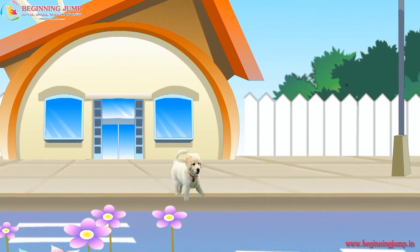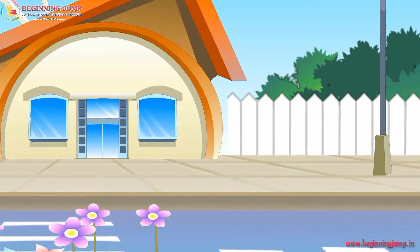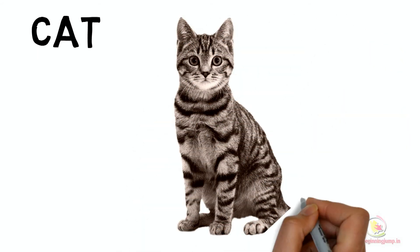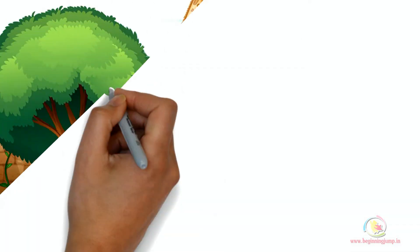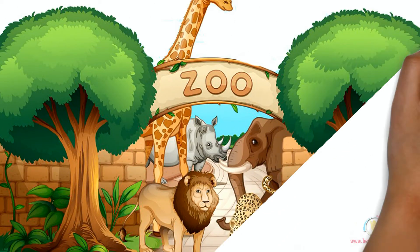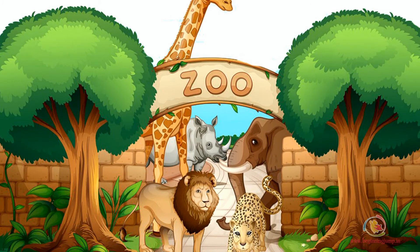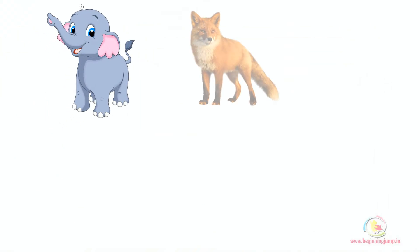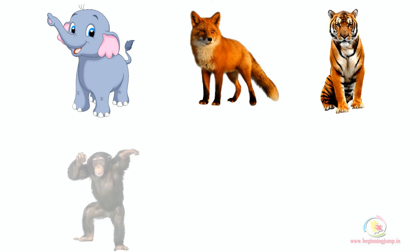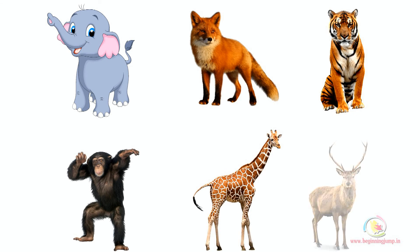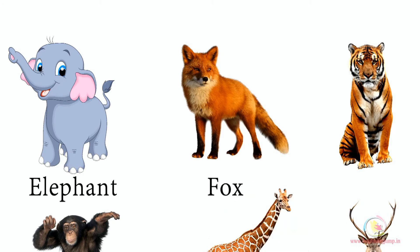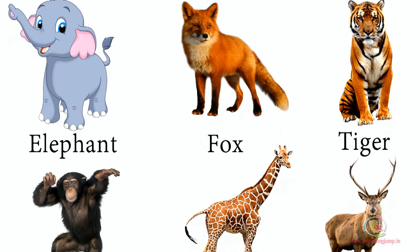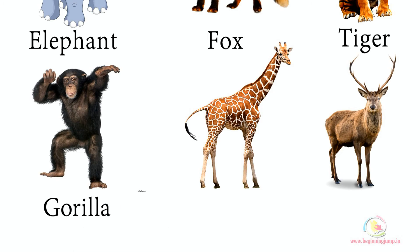These are the naming words for animals. When you read the word 'cat,' you know what kind of animal it is. Think about the animals that you see in a zoo — their names are naming words, or nouns, like elephant, fox, tiger, gorilla, giraffe, and deer.